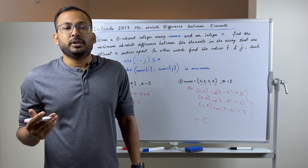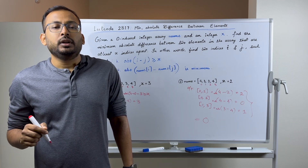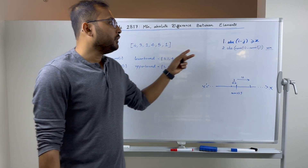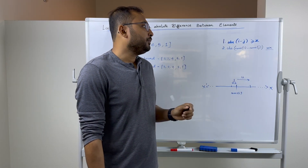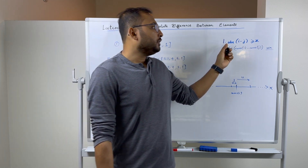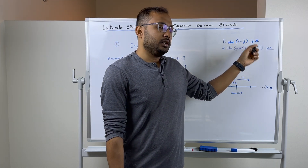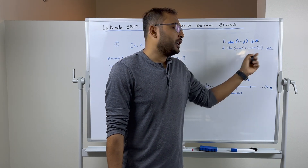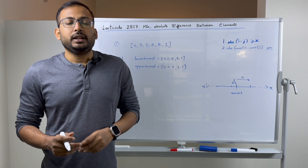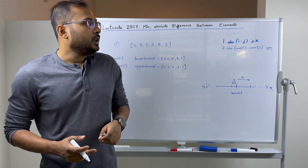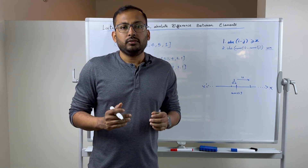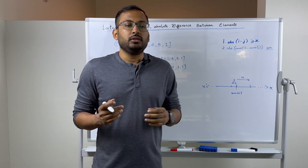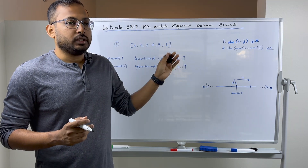For a detailed problem statement, check the link in the description and pause the video if you want to think about the solution. We are given two conditions: the absolute difference of the indexes has to be at least x, and the absolute difference of the values at those indices has to be minimum. My strategy is to remove conditions and solve the easier version first, then add conditions back and modify the solution.